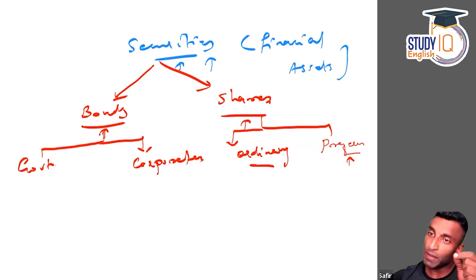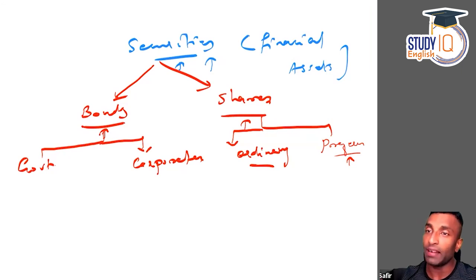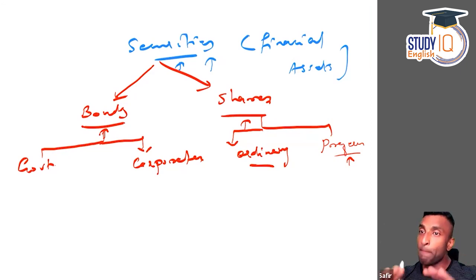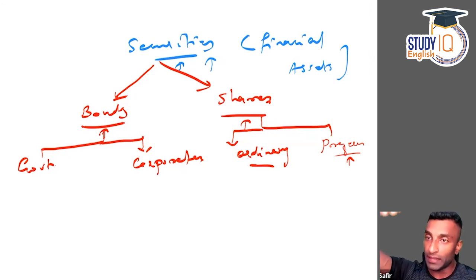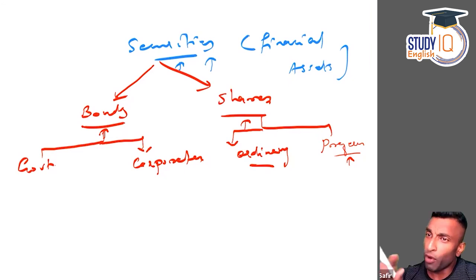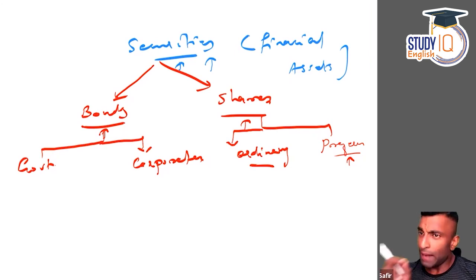Those who hold preference shares have a preference claim on dividend and on assets when the company is being liquidated — when you're selling the assets of the company, they get preference. Even in case of small profits when you are distributing dividend, the preference shareholder will get it first.